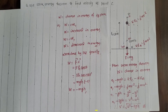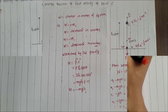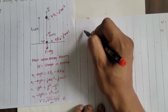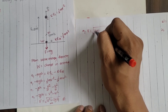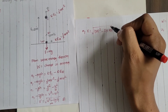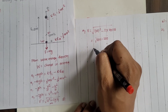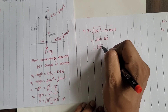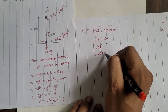Cancelling mass m from both sides and solving, we get v equals root over (u² − 2gh). Substituting values: u equals 20 m/s, so u² equals 400; g equals 10, and height h equals 10 m, so 2gh equals 200. Therefore v equals root over (400 − 200) equals root over 200, which equals 10√2 meters per second. The velocity of the object at point C is 10√2 m/s.